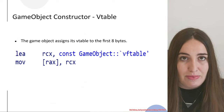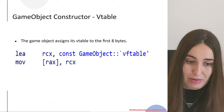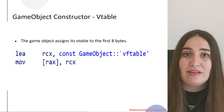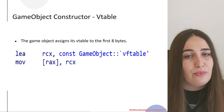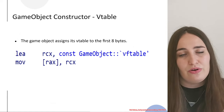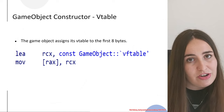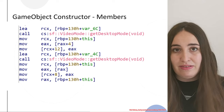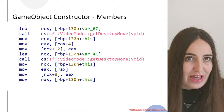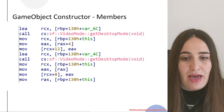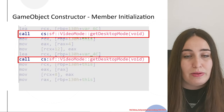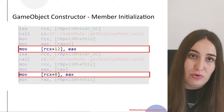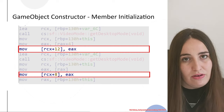The game object assigns the vtable to the first 8 bytes of its object structure in memory. This makes sense because the derived class — spaceship — has a vtable, and when we have a derived class with a vtable, we usually also have a base class with a vtable, since many virtual functions are defined in the base class. The game object constructor initializes two members stored at offset 8 and offset 12 of the object structure in memory.